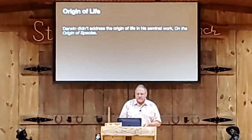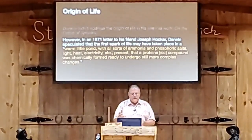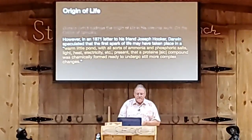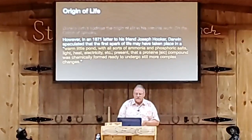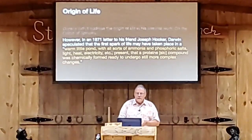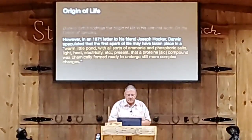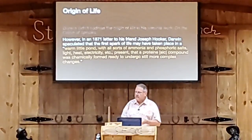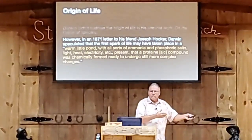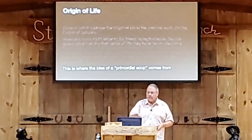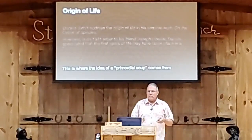Darwin didn't address the origin in his book. In 1871 — about 15 years after his book came out — he wrote to a friend named Joseph Hooker, speculating that life may have come from 'a warm little pond with all sorts of ammonium and phosphoric salts, light, heat, electricity, etc. present, where a protein compound was chemically formed ready to undergo still more complex changes.' That was the closest he got. Today we hear that life was created in the primordial soup — that notion of a warm little pond of goo that somehow generates a cell.